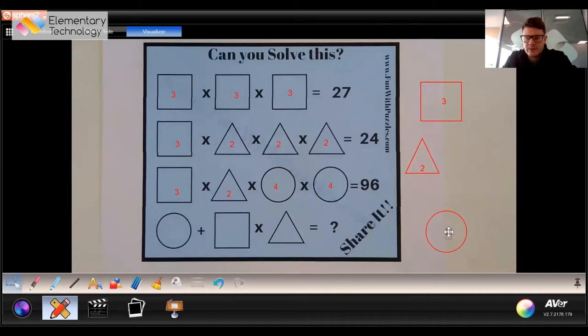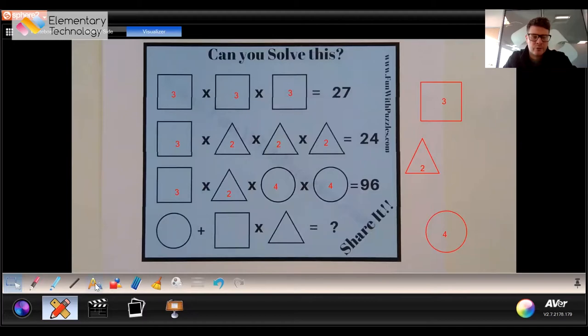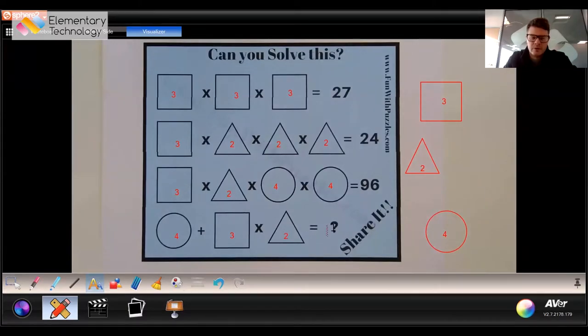Now we can use our sums that we've done on the right hand side. 4+3×2 will give us the answer of 14. And again, anything you want, you can move it across. Really simple, just use annotation tools there.